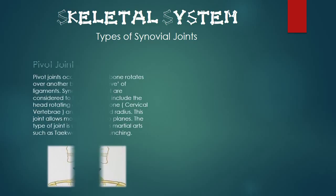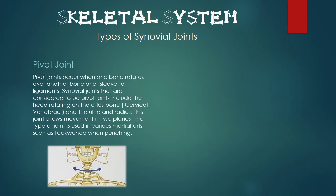Next we have the pivot joint. Pivot joints occur when one bone rotates over another bone or a sleeve of ligaments. Synovial joints that are considered to be pivot joints include the head rotating on the atlas bone on the cervical vertebrae, and the ulna down the radius. This joint allows movement in two planes and is used in various martial arts such as taekwondo when punching.